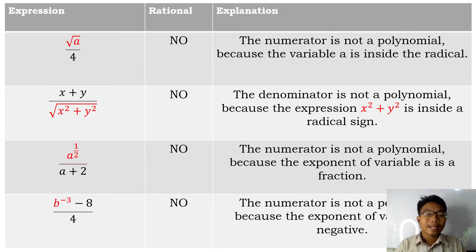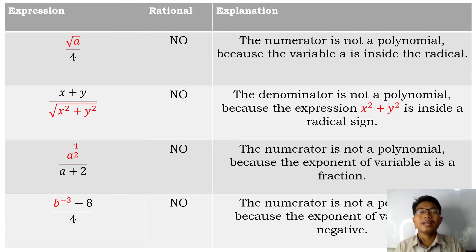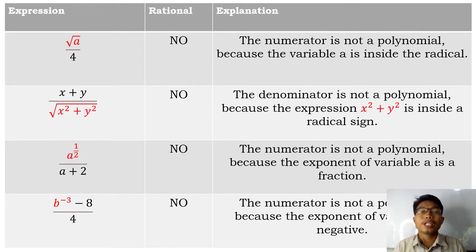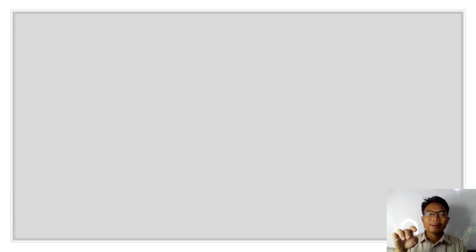a raised to 1 half over a plus 2 is not a rational expression because the numerator has a fractional exponent, making it not a polynomial. b raised to negative 3 minus 8 over 4 is also not a rational expression because the exponent of b is negative.